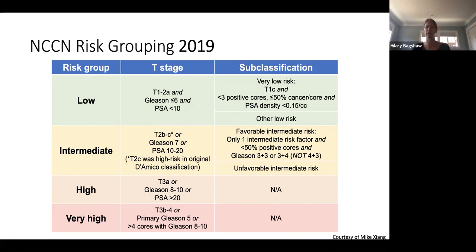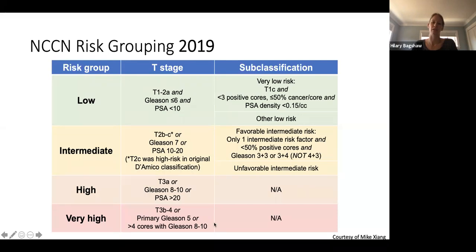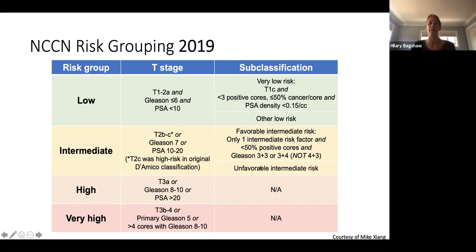The risk groupings depend on your T stage, your Gleason score from the biopsy — which reflects cancer grade and aggressiveness, ranging from 6 to 10 — and your PSA from the blood draw. A higher grade cancer, 8 or above, is in the high risk group; 6 is low risk; 7 is in the middle. This affects treatment recommendations, specifically for radiation.